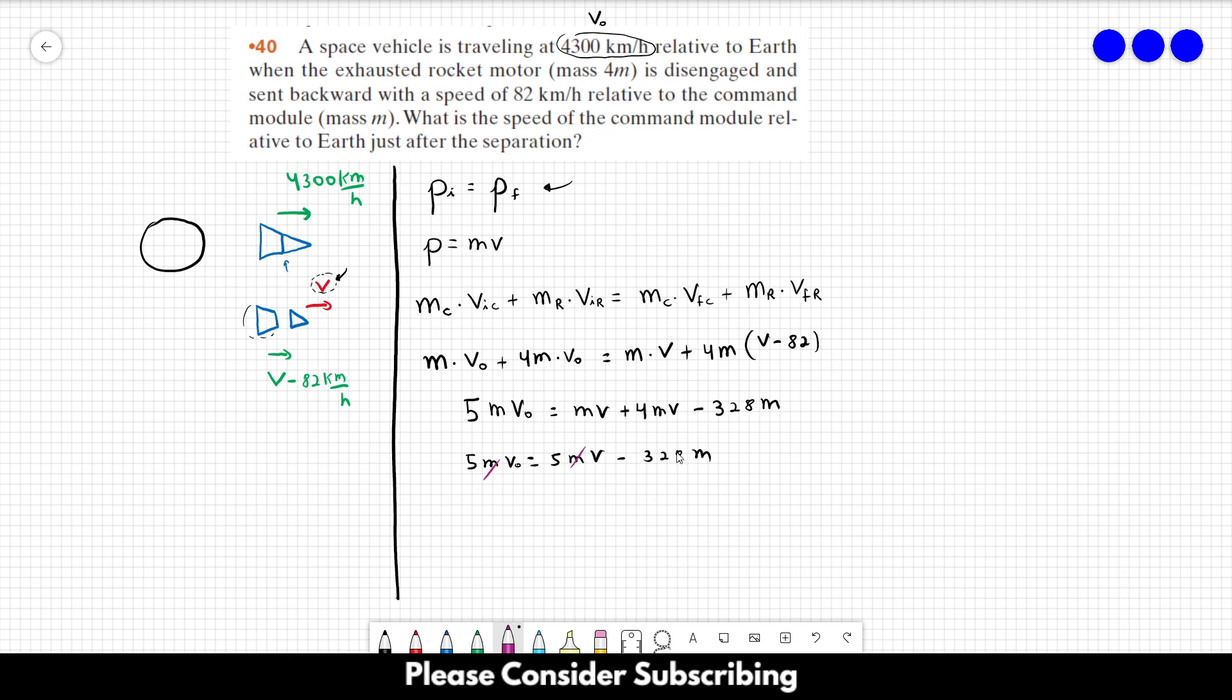We can cross all the masses out, so we're going to send this number to the left. So 5v₀ plus 328 is equal to 5v. So v is equal to 5v₀ plus 328 divided by 5.